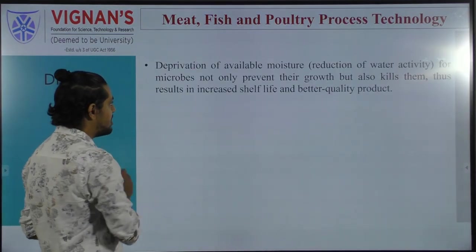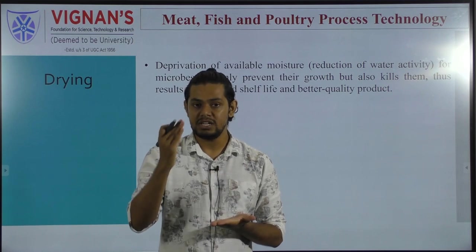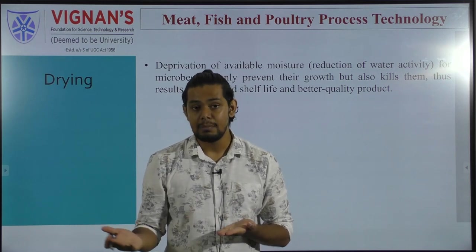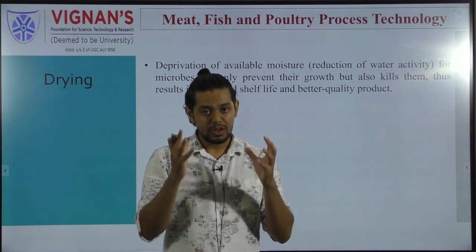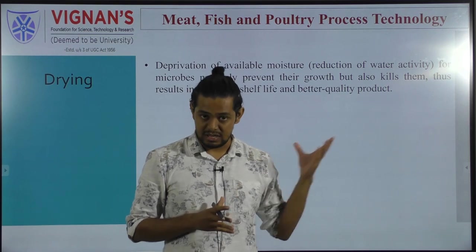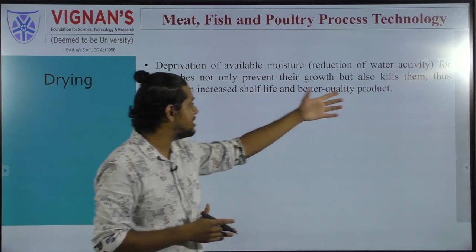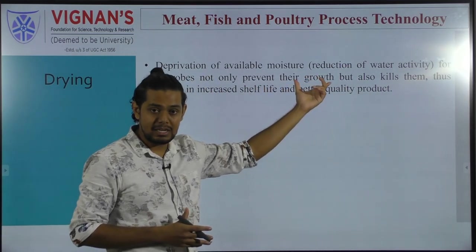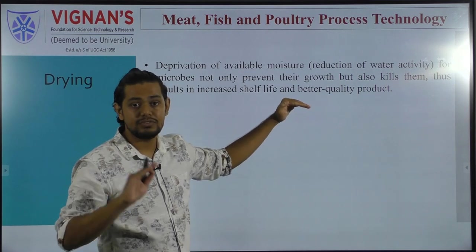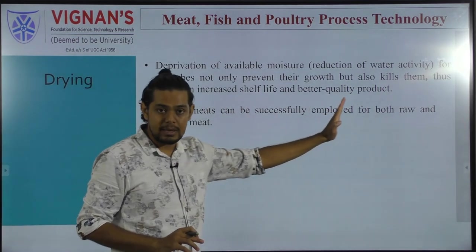Drying works by reducing the moisture content, which in turn reduces water activity. When water activity is reduced, microorganisms cannot grow or multiply. Water activity is one of the important factors that decides what kind of microorganisms are growing in a food matrix. The major aim is reduction in water activity so that microbial growth and multiplication are reduced to an extent that the food product does not undergo spoilage.